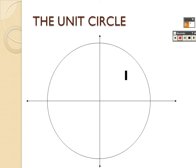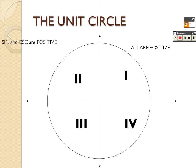Write this down because it will help you remember where sine, cosine, and tangent are positive on the unit circle. In quadrant 1, everything is positive — sine, cosine, tangent, cosecant, secant, and cotangent are all positive for angles between 0 and 90 degrees. In quadrant 2, only sine and cosecant are positive; everything else is negative. For example, 120 and 150 degrees are in quadrant 2, so sine of 150 is positive but cosine of 150 is negative.